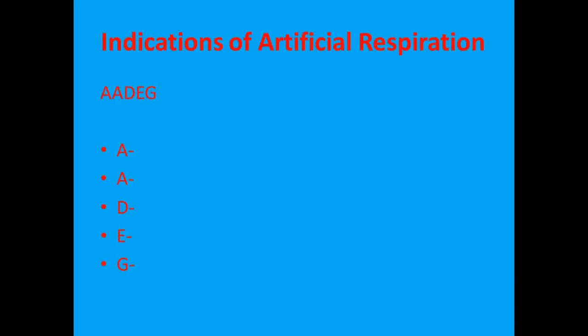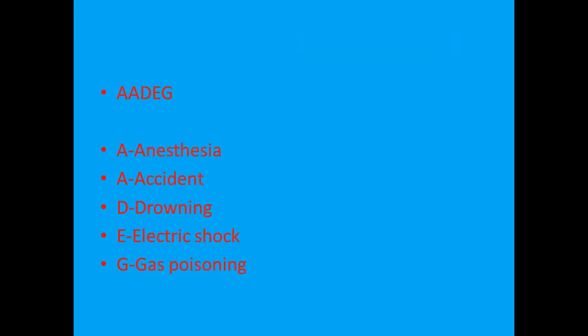Indications of artificial respiration — may be mouth to mouth, mouth to nose, mouth to stoma, or with the help of devices. The mnemonic is double-A DEG: A for anesthesia, A for accident, D for drowning, E for electric shock, and G for gas poisoning. Revision: anesthesia, accident, drowning, electric shock, and gas poisoning.